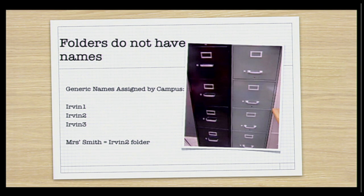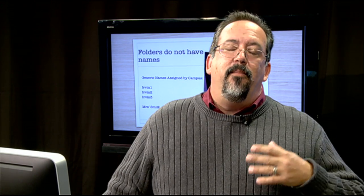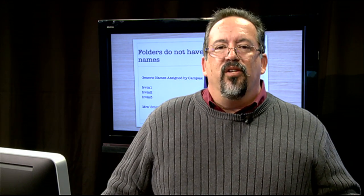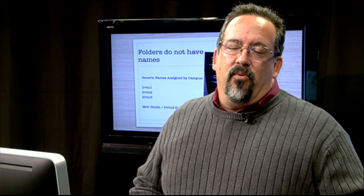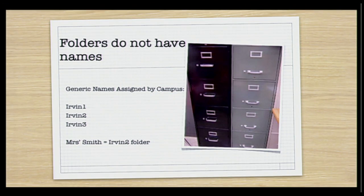Each teacher has their specific drawer in that filing cabinet, and each campus has a whole set of filing cabinets. We decided that since teachers are kind of a fluid group — for instance, Mrs. Smith might be at Irvin this year and Burgess the next, and Mr. Jones at Coronado this year might be at Franklin the following year — instead of assigning filing cabinet drawers to a particular teacher, we'd come up with generic names. So we're going to use Irvin High School as our example: Irvin 1, Irvin 2, Irvin 3 are the titles of these drawers in our filing cabinet on the WebDAV server.